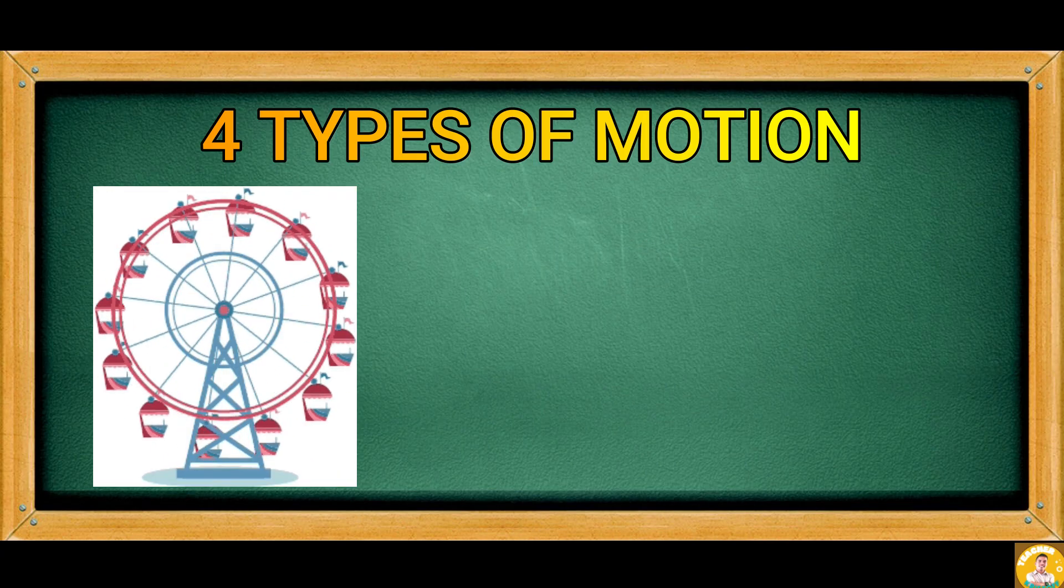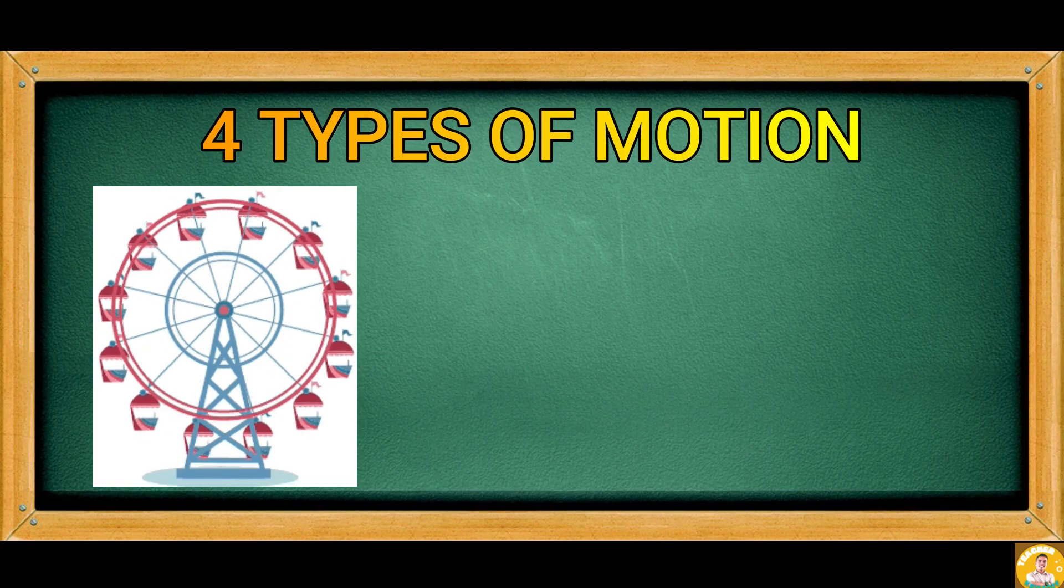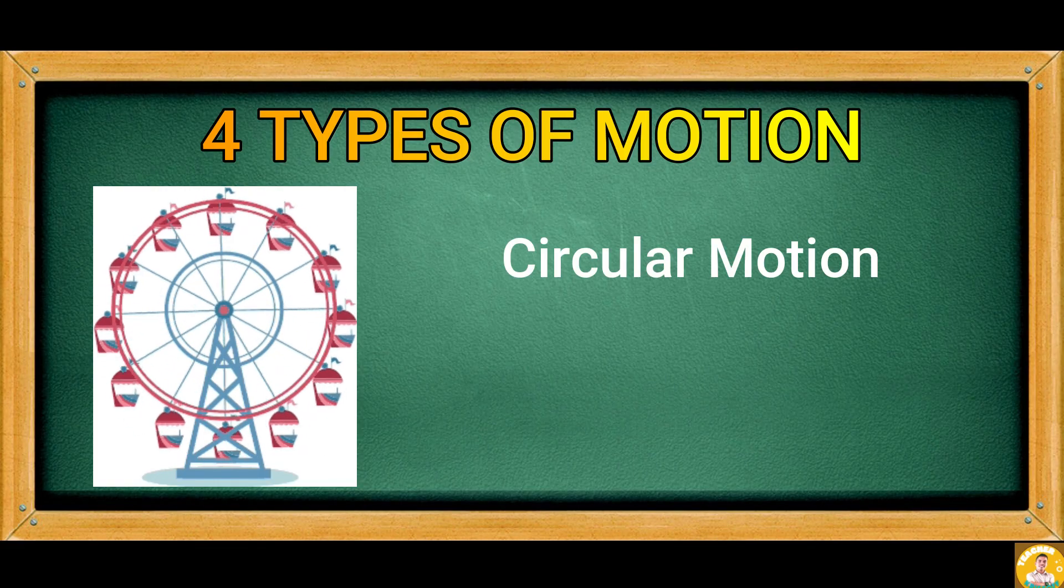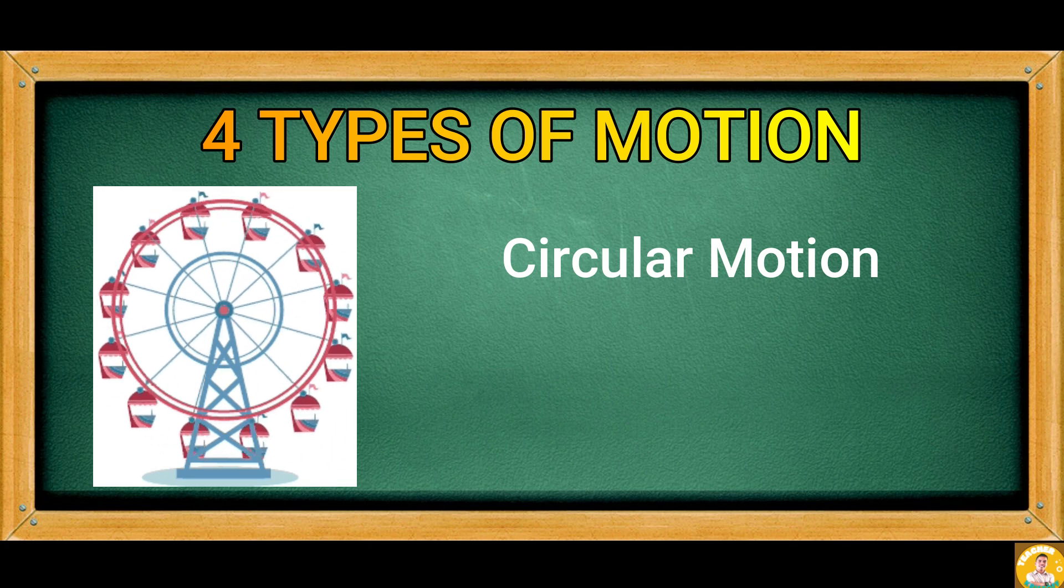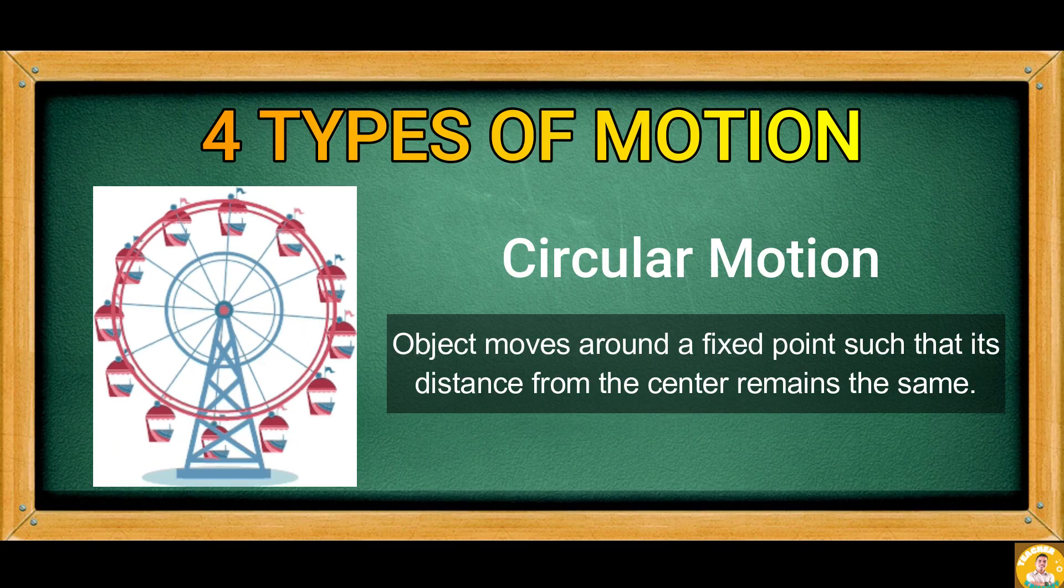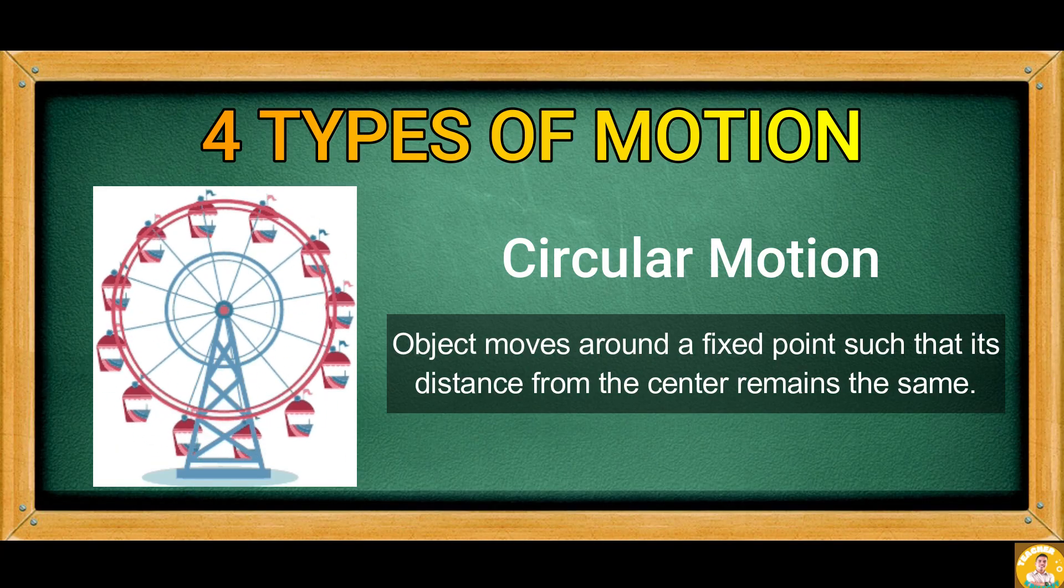The next picture is a ferris wheel wherein the motion of an object is in a circular path called circular motion. In circular motion, object moves around a fixed point such that its distance from the center remains the same.